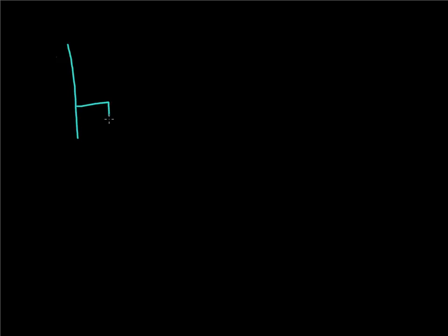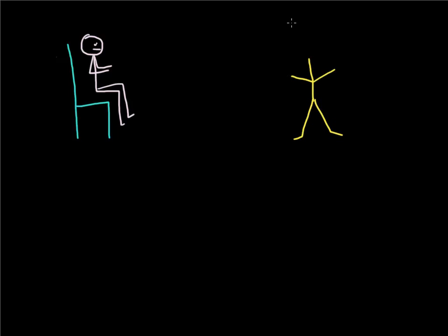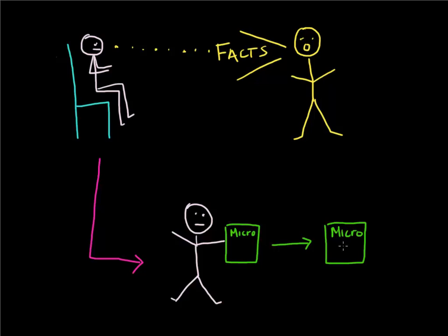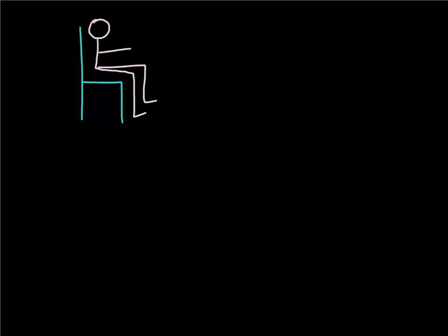The flipped classroom is a really simple concept, and this is your typical model. First, I'll describe the traditional classroom. The student comes to class and learns the facts in lecture — that's where he hears them for the first time. They are delivered by a lecturer and received by the student. The student then goes home and studies. In a flipped classroom, these learning events are shifted.